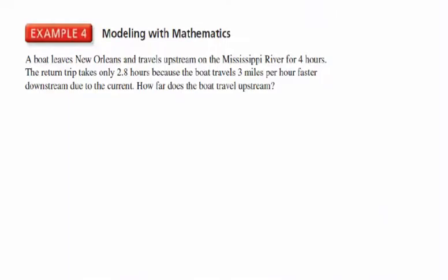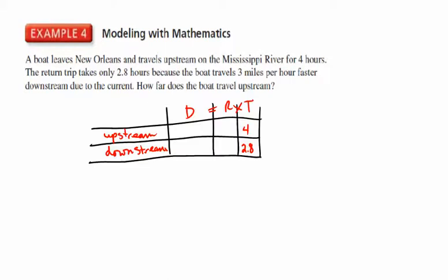So in this problem, we come back to something we did earlier in the marking period. A boat leaves New Orleans, travels upstream for four hours. The return trip takes only 2.8 hours. So to save some time, I'm going to set up the chart all at one time. And the boat is traveling three miles per hour faster downstream than upstream. So we know that going upstream, it took four hours. Coming back, it took 2.8 hours. Now we don't know the rate going upstream. So we're going to put X there. But we do know that it's three miles per hour faster coming back. So we're going to put X plus 3 there. So on our distance, we have 4X and we have 2.8 times X plus 3 for the distance there. So we just need to set these two equal to each other.